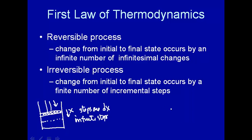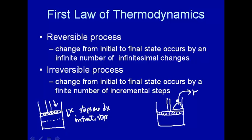Let's take an example of that using our PV work setup. Here's our piston, and on it we have a certain weight pushing the piston down. Suddenly, in zero time, we remove the weight. So now suddenly the pressure has decreased instantaneously from one pressure to another, and now the volume is going to change — the piston is going to go up, the volume of the gas or the system is going to increase. So that's an example of an irreversible process. The change from the initial to final state occurs by a finite number of incremental steps — in this case, it was just one step, and suddenly the pressure changed.